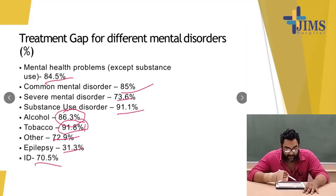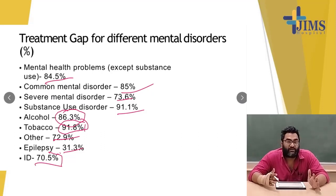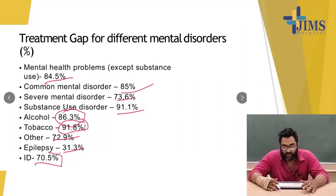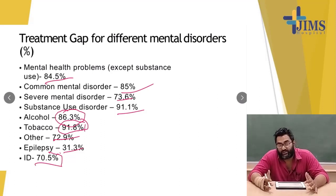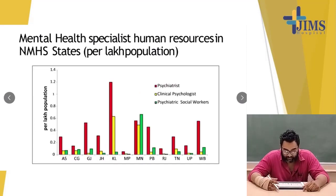The treatment gap for intellectual disability exists because the child requires lifelong treatment. Intellectual disability is divided into four categories: mild, moderate, severe, and profound. In mild and moderate, patients can lead a relatively normal life, but in severe and profound they cannot. There is no medicine that can increase IQ in any human being. Mental health specialist human resource issues were also noted in the NMHS state data.